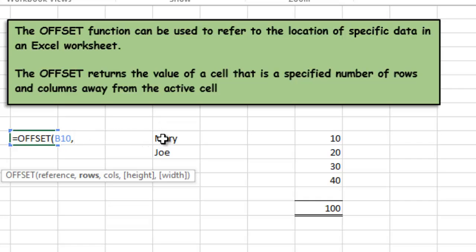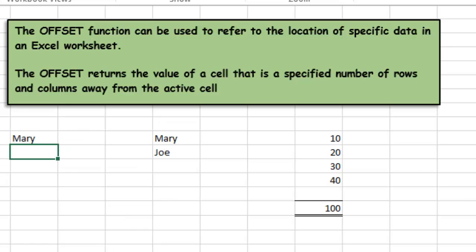To pull in Mary, we're not moving any rows, we're moving columns. Now it's looking for how many columns away. We're in cell B10, so the next is C, D, and E, so it would be three columns. We can skip the height and width and hit return, and you will see that we have returned the name Mary by using the OFFSET function.